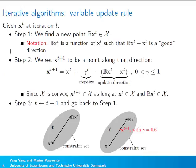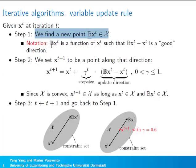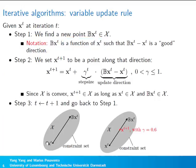Most iterative algorithms consist of two steps. Given a point x_t at the current iteration t, in the first step we find a new point bx_t in the constraint set. Note that bx_t is a function of x_t, not a multiplication. The difference bx_t minus x_t specifies the update direction. In the next step, we obtain a new point x_{t+1} by moving from x_t along this update direction by a step size gamma, which is always between 0 and 1.